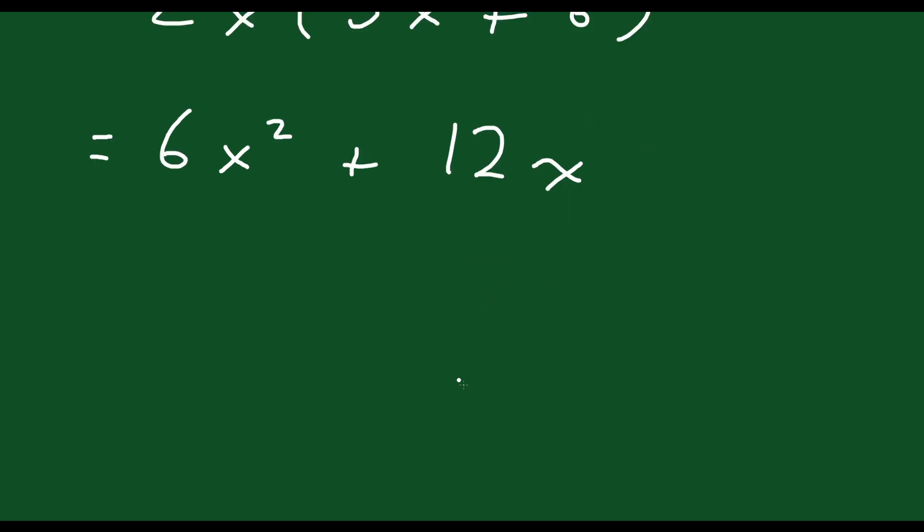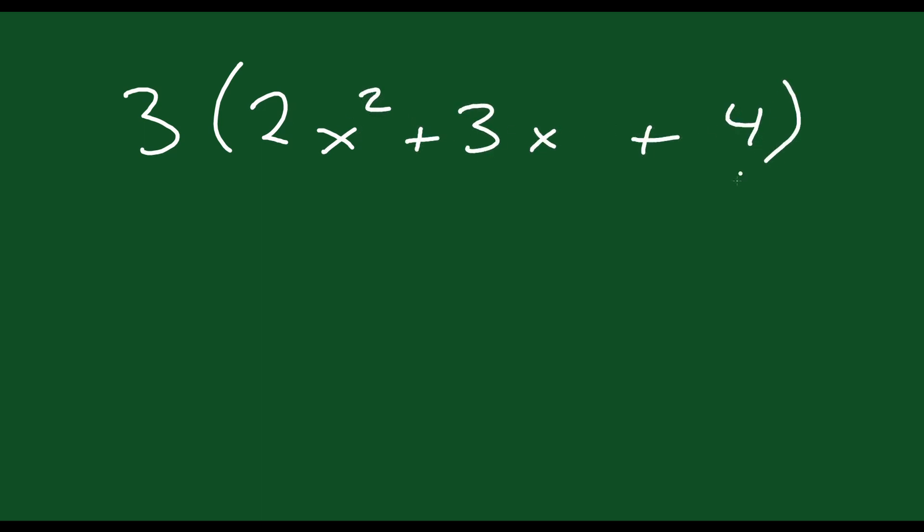Let's do another one. Let's say you have 3 times (2x² plus 3x plus 4). Now these parentheses do not contain a binomial—they contain a trinomial.